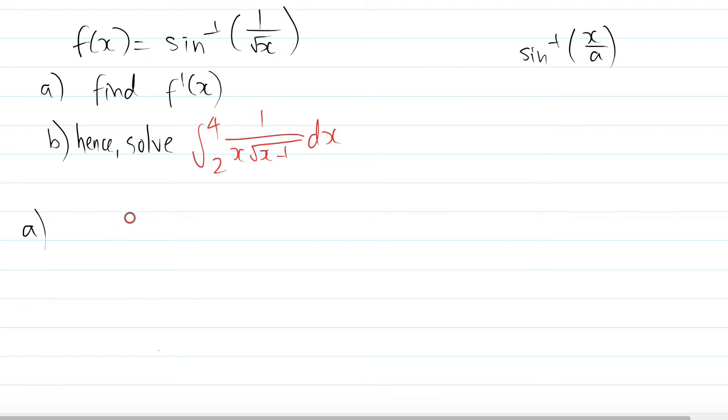You can let u equal that, in this case 1 on square root x, which you can write as x to the power of negative half. Negative means it's on the denominator, half means it's square root.